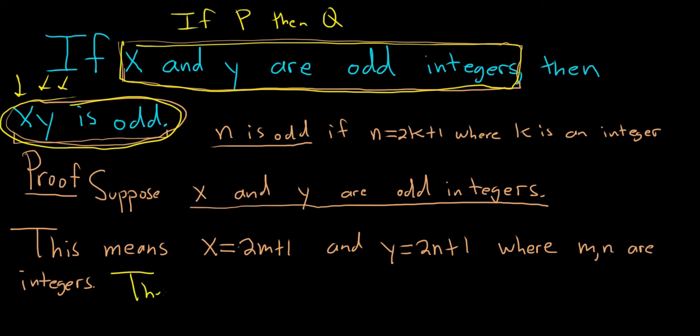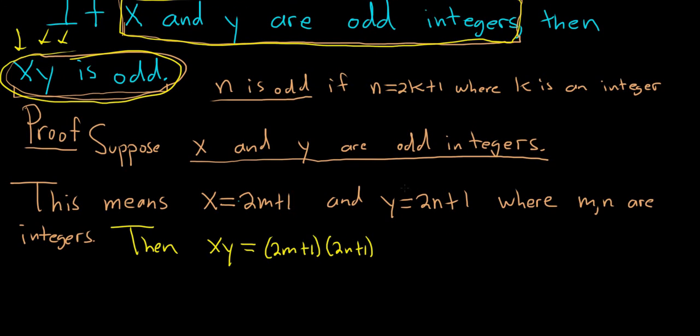Now you go ahead and investigate what it is you're trying to show. So then x times y is equal to, well x is 2m plus 1, n is, y is 2n plus 1, and you just multiply it out and hopefully the result is odd.